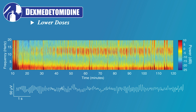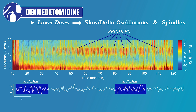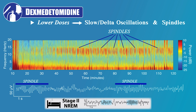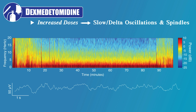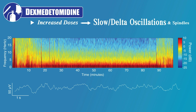At low doses, the typical EEG pattern for dex is a combination of slow delta oscillations and spindles, which are 9 to 15 hertz oscillations that occur in bursts lasting 1 to 2 seconds. These spindles closely resemble a feature of stage 2 non-REM sleep. In this state of sedation, patients are likely to respond to minimal auditory and tactile stimulation. As the dose increases, the spindles become smaller and the amplitude of the slow delta oscillations increase. The EEG pattern at this state resembles slow wave sleep, and patients are typically unresponsive to verbal queries, but they may move in response to changes in the level of nociceptive stimulation.